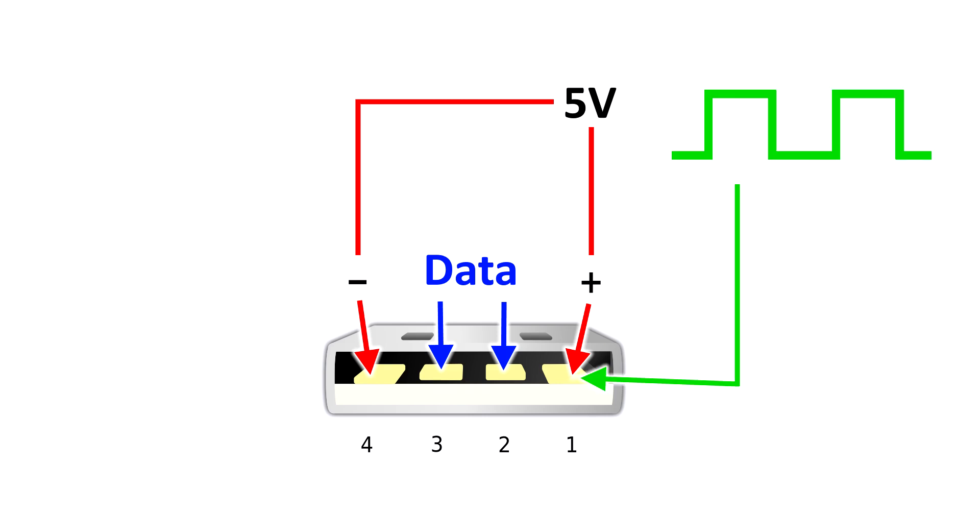So the trick that quick chargers use is they send an extra signal. Here I've shown it as a green square wave. And as you can see, you have your 5 volts going in on pin one, the positive side, but you also have this digital signal, this crazy square wave. And that is actually the secret to how quick chargers really work.